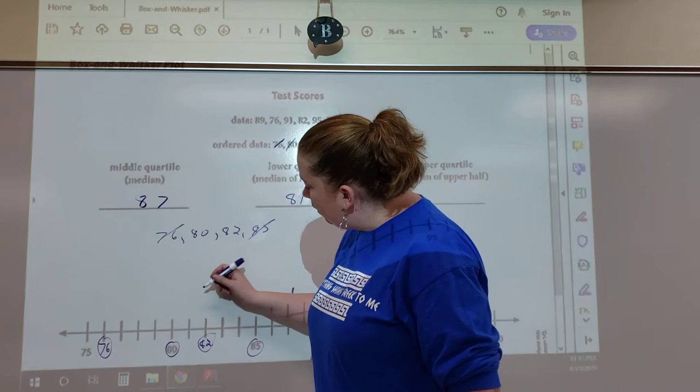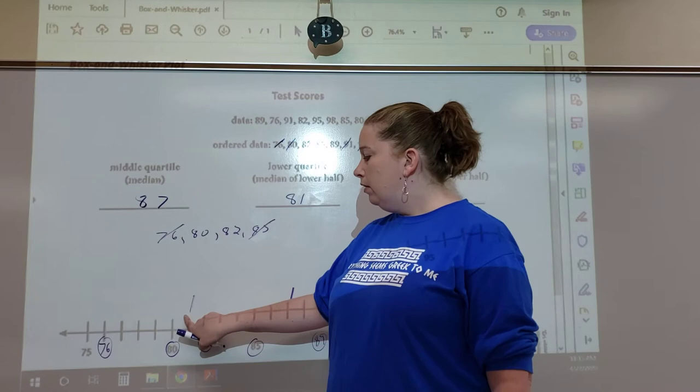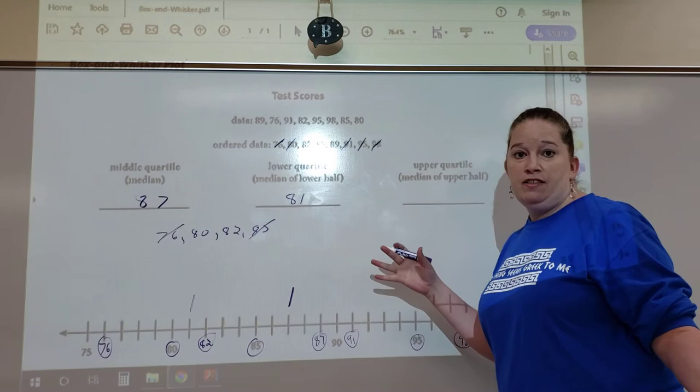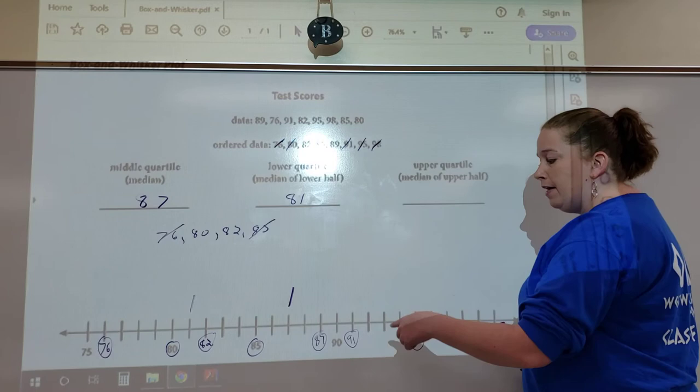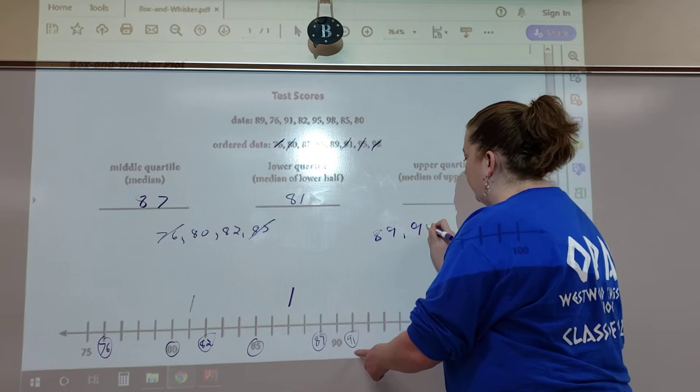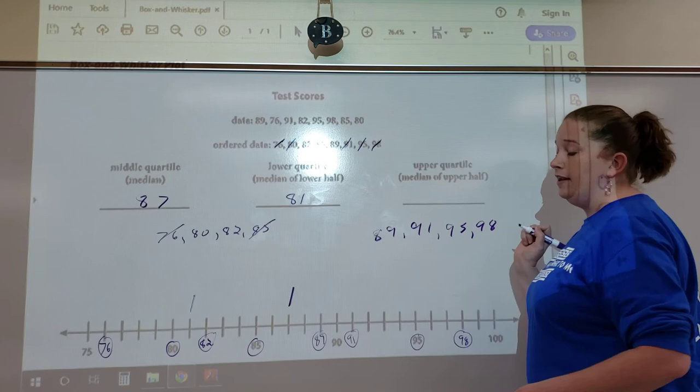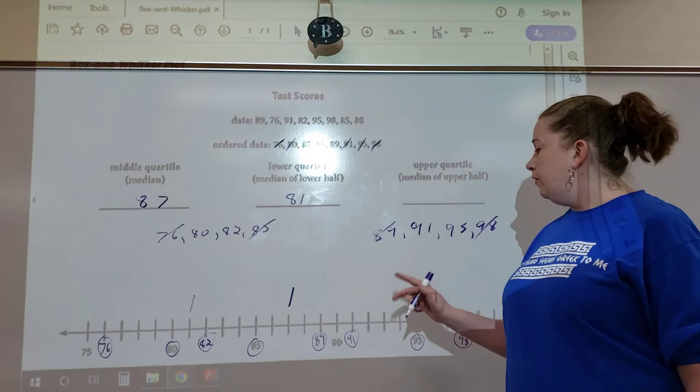To find the upper quartile, it's basically the same thing except this time we're looking to the right of our middle quartile. Remember, do not include this number, only include the numbers above it. So we have 89, 91, 95, and 98.